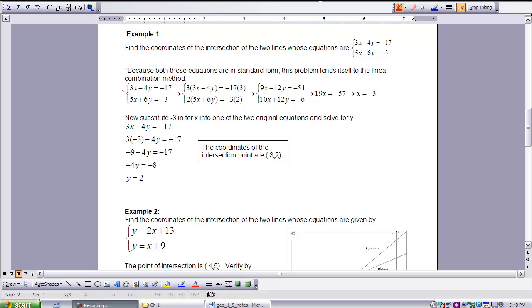Remembering back to algebra, to use linear combinations, we want to manipulate our equations so that one set of values can be eliminated. I've chosen to multiply the top line by 3 and the bottom equation by 2. That results in 3 times 3x equaling 9x, 3 times -4y is -12y, and -17 times 3 is -51. Working with the second equation, 2 times 5x is 10x, 2 times 6y is 12y, and -3 times 2 is -6.